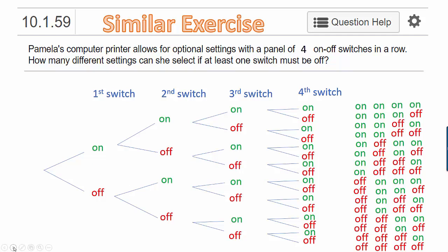Let's look at a similar exercise where we could use this same tree diagram. It says Pamela's computer printer allows for optional settings with a panel of four on-off switches in a row. How many different settings can she select if at least one switch must be off? Now my tree diagram represented the situation where there were no restrictions whatsoever. But the reason that I'm going to use the same tree diagram is that I can remove anything that I don't want.